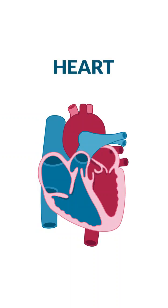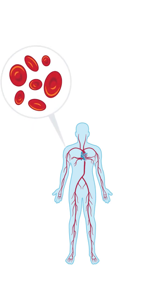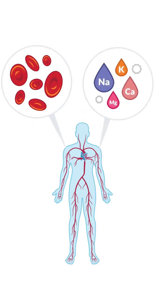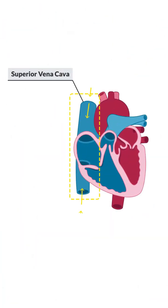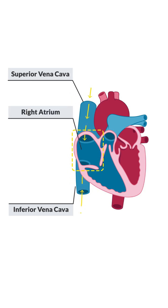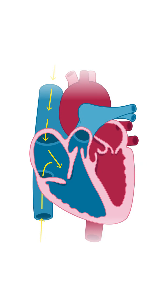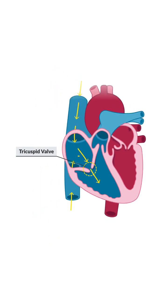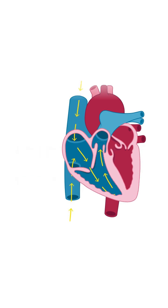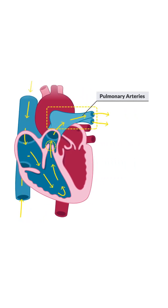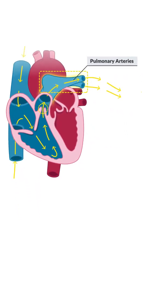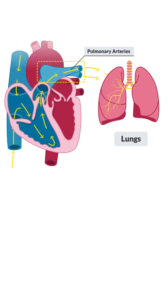The human heart is like a pump that keeps blood moving through your body. Deoxygenated blood enters the heart through the superior vena cava and inferior vena cava, flowing into the right atrium, one of the heart's upper chambers. The right atrium contracts and pumps the blood through the tricuspid valve into the right ventricle, which then contracts and pumps the blood through the pulmonary valve into the pulmonary artery, carrying the blood into the lungs for oxygenation.